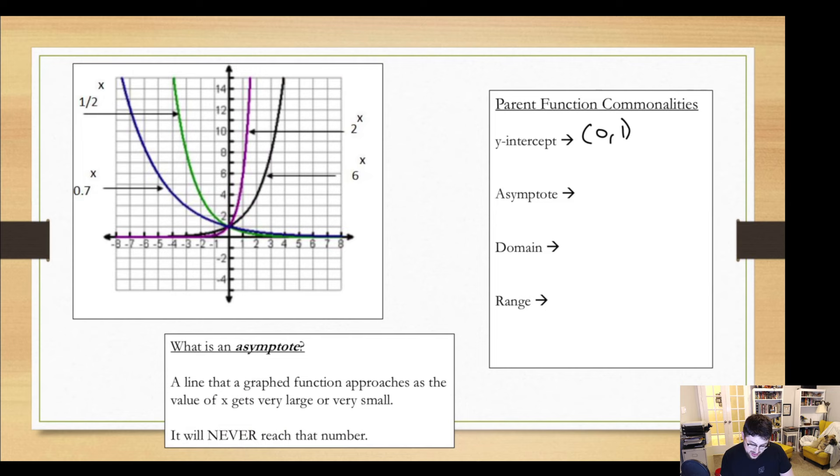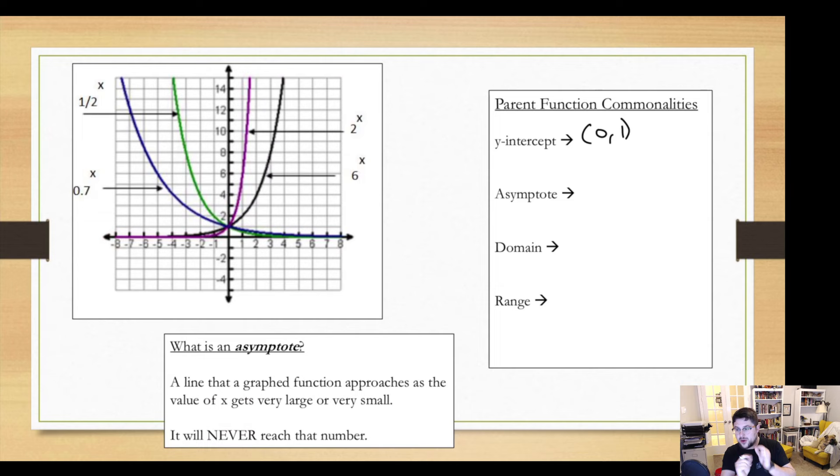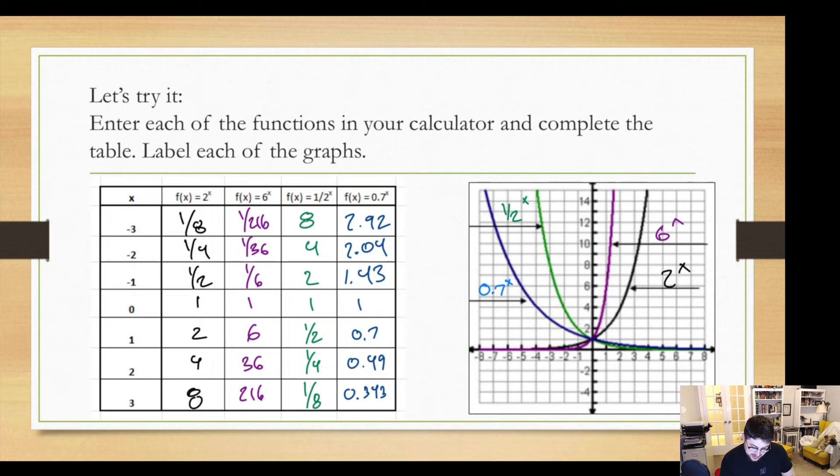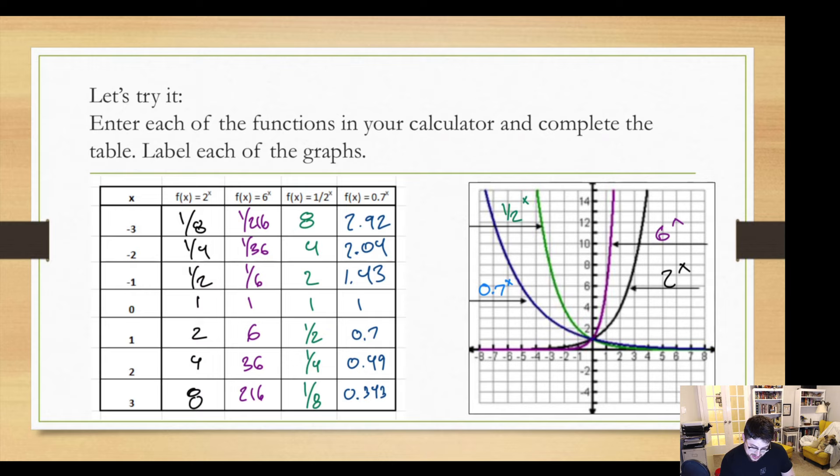Also, all of these graphs kind of level out in the same way. They all have what we call an asymptote. You might notice these graphs get very, very close to the x-axis. What they get close to but don't quite touch, that's our asymptote. Because if we look back to our table, these graphs are dividing essentially by 6 or by 2 as they go that way, or multiply by one half or multiply by a decimal. And they get very, very small.